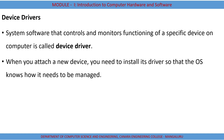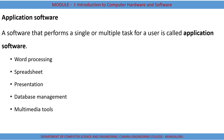Next we have application software. Application software is software that performs single or multiple tasks for a user — it is based on user requirements. If you want to perform some specific task beyond the basic operations, that is referred to as application software. Examples include word processing, spreadsheets, presentation tools, database management, and multimedia tools.